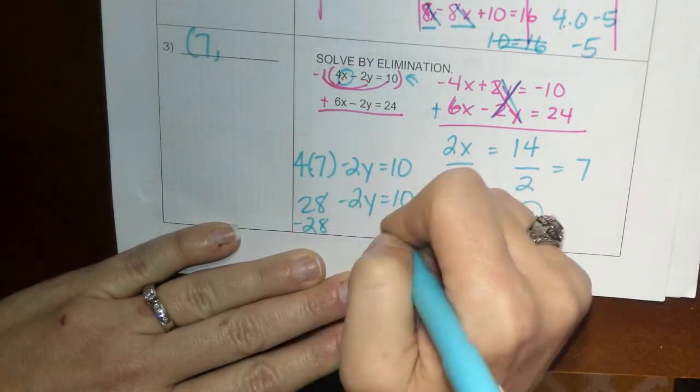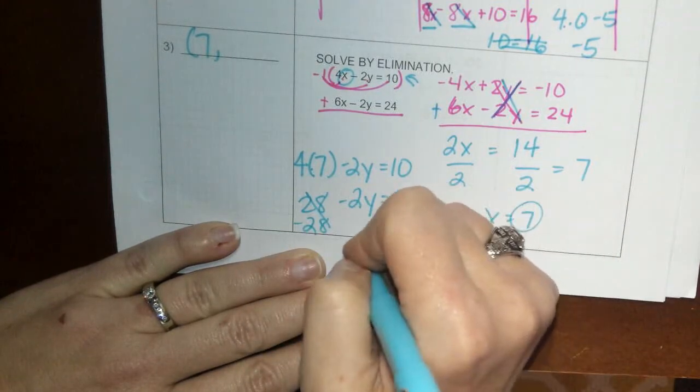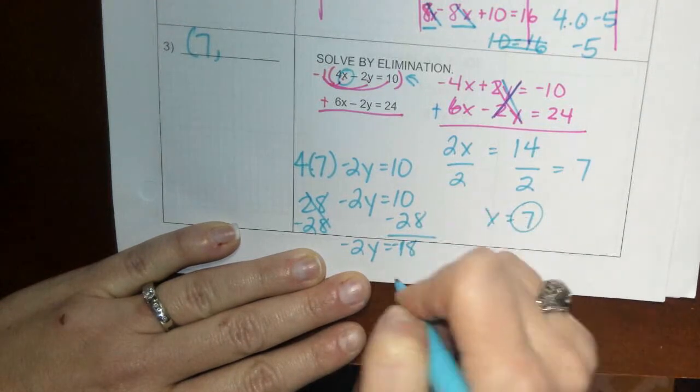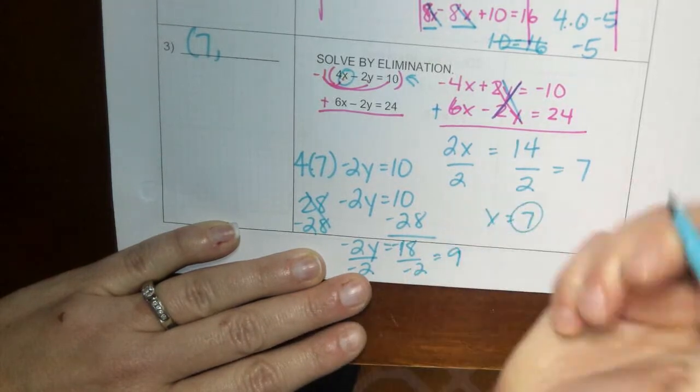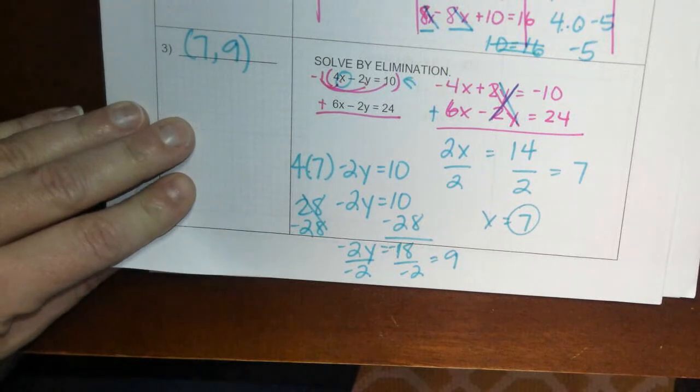We're going to subtract 28 from both sides, and that would give you negative 2y equals negative 18. Divided by negative 2, and you get a positive 9. So 9 is your y. (7, 9).